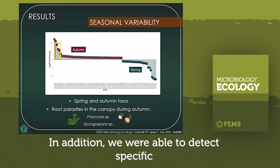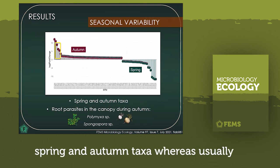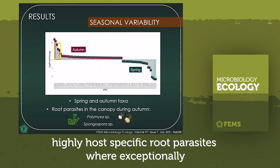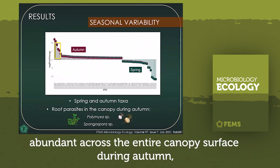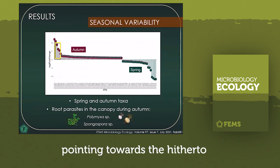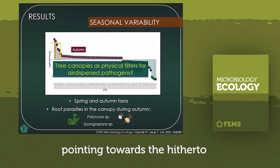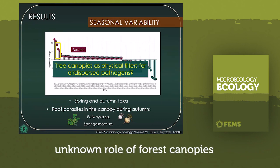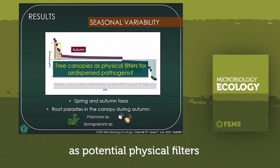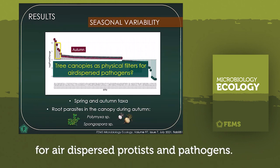In addition, we were able to detect specific spring and autumn taxa, whereas usually highly host-specific root parasites were exceptionally abundant across the entire canopy surface during autumn, pointing towards the unknown role of forest canopies as potential physical filters for air-dispersed protists and pathogens.